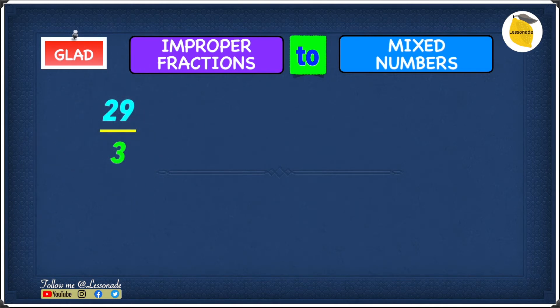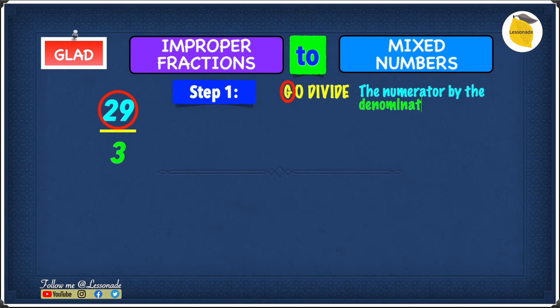So let's start with step 1. Step 1 is G, and G is go divide the numerator, which is 29, by the denominator, which is 3. So 29 divided by 3 is going to give you 9 and a remainder of 2.